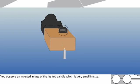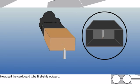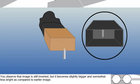You observe an inverted image of the lighted candle which is very small in size. Now pull the cardboard tube B slightly outward. You observe that image is still inverted but it becomes slightly bigger and somewhat less bright as compared to earlier image.